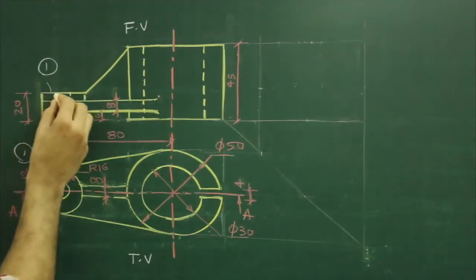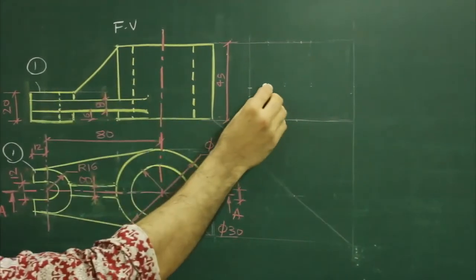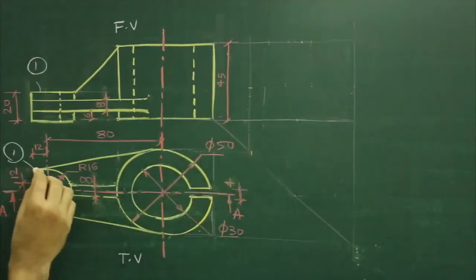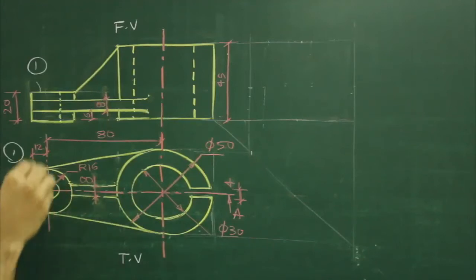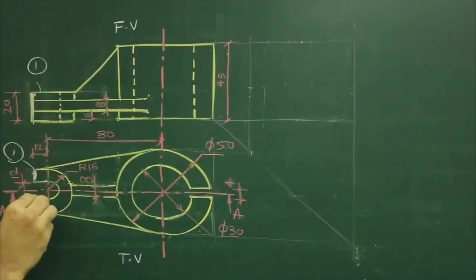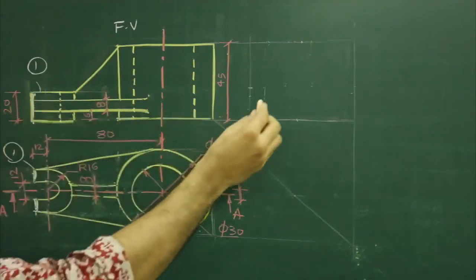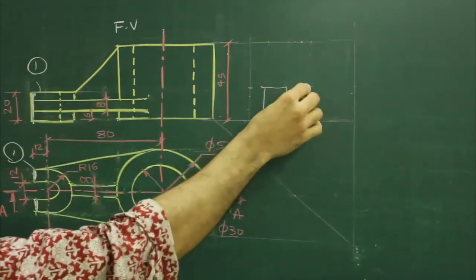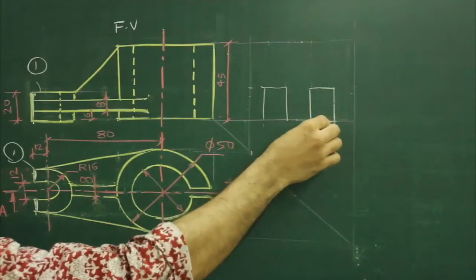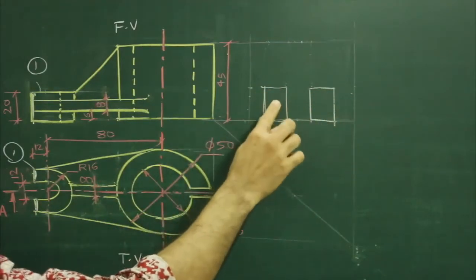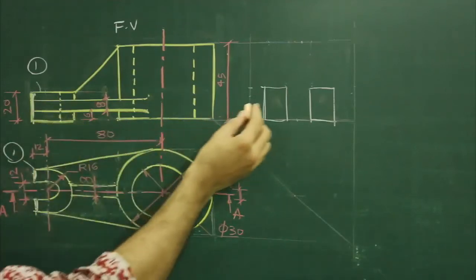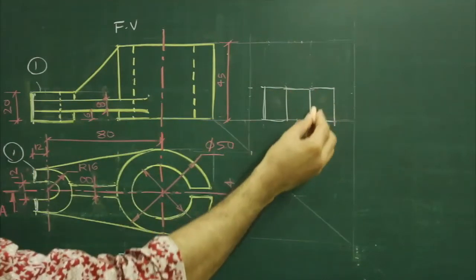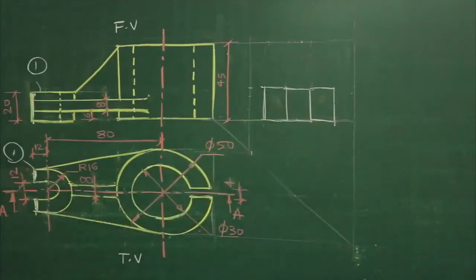So when we project from here, I will project this, this, and this. When I project, I will have two rectangles — one and two for this portion. Then we have this circular object, and for that also we will have a rectangle. So more or less we will have this kind of rectangle.